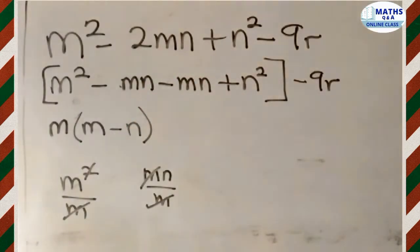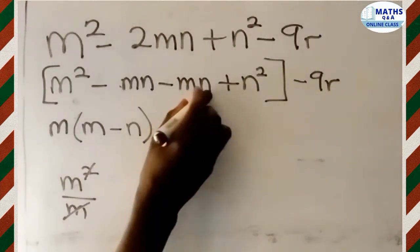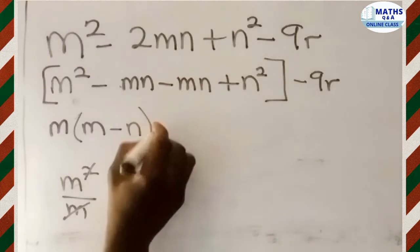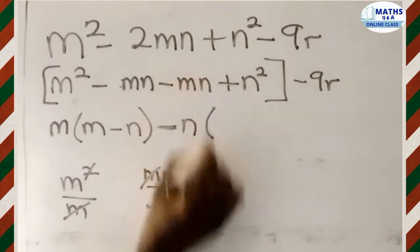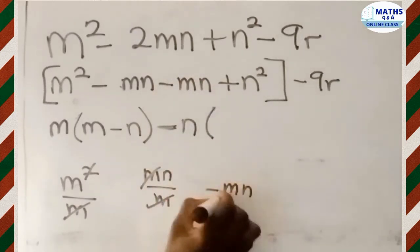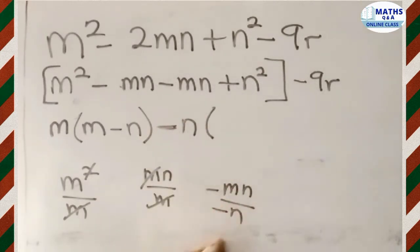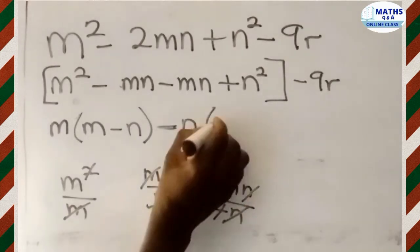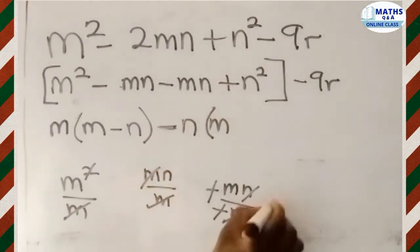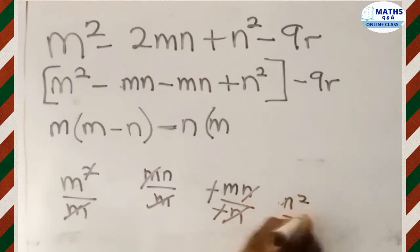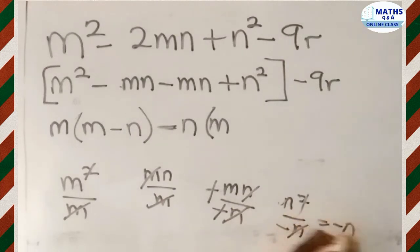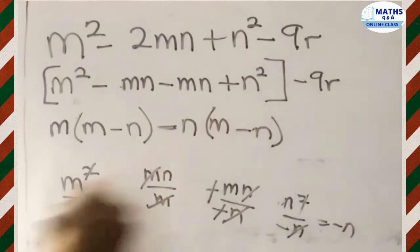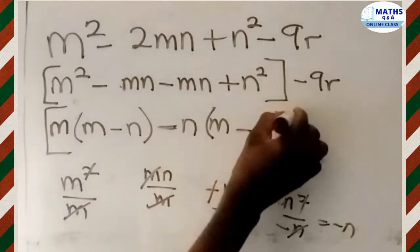Now we come to the next two terms: negative MN plus N squared. The common values here are N and N, so N is common to both. We take out negative N. Negative MN divided by negative N gives M, and positive N squared divided by negative N gives negative N. So this group factorizes to negative N times (M minus N).